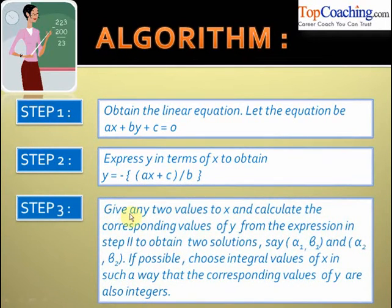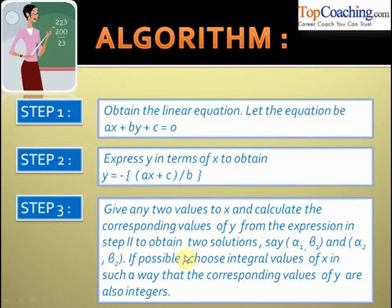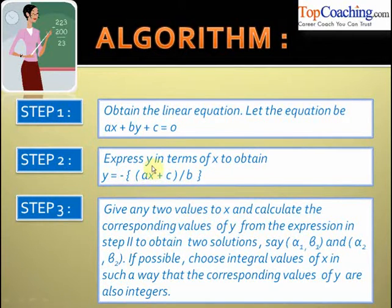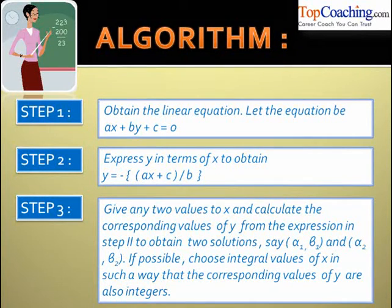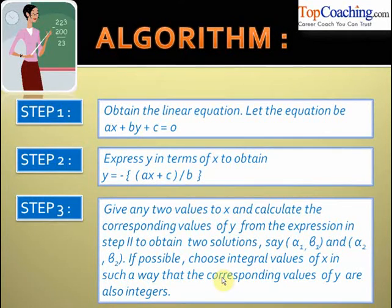In the third step, give any two values to x and calculate the corresponding values of y from the expression obtained in step two. Let us say that the two solutions obtained are (α₁, β₁) and (α₂, β₂). If possible, choose integral values of x in such a way that the corresponding values of y are also integers, so as to get integral solutions. That would make the work easier.